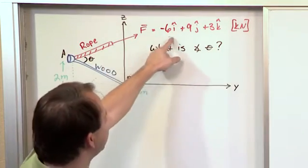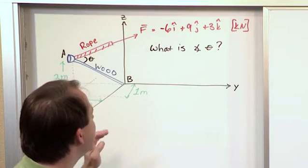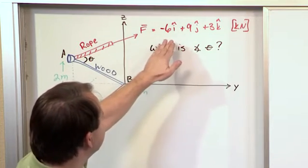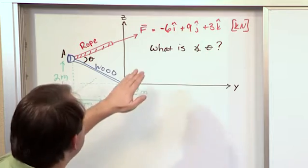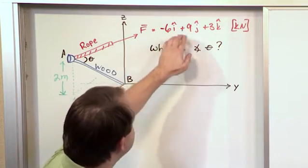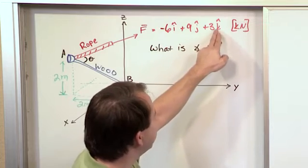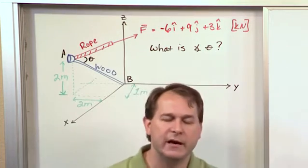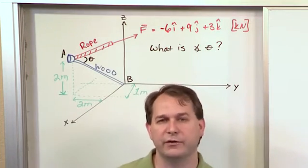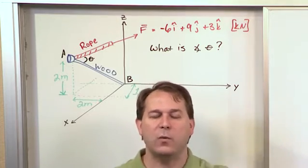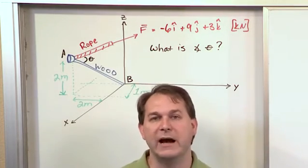Notice the force vector is already given in Cartesian coordinates. We have negative 6 kilonewtons in the i direction, 9 kilonewtons in the j direction, and 3 kilonewtons in the k direction. Since the force vector is given in Cartesian, you already know its x, y, and z components, where x, y, z correspond to i, j, and k.